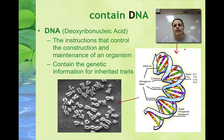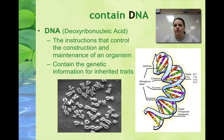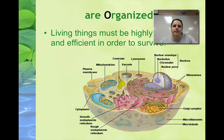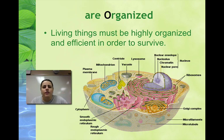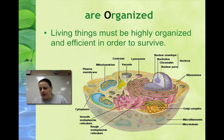DNA controls the traits for why an organism is and does the things that it does. We're going to talk about inheriting those traits in the genetics and DNA chapter. All living things are also organized — this means they have to be organized in order to efficiently survive. If they're not efficient, they're not going to survive.